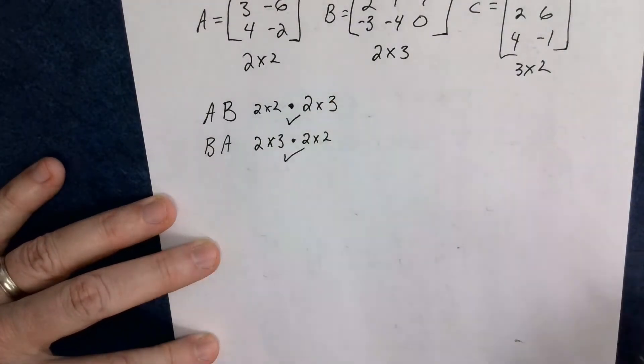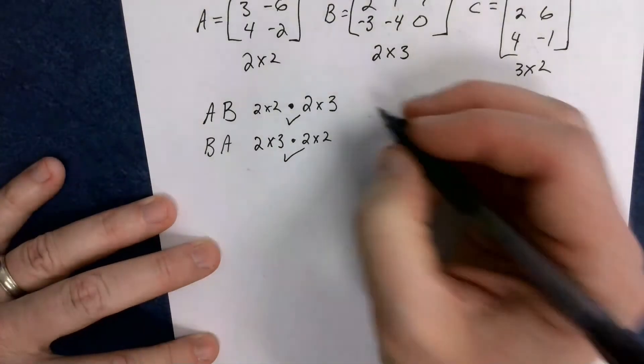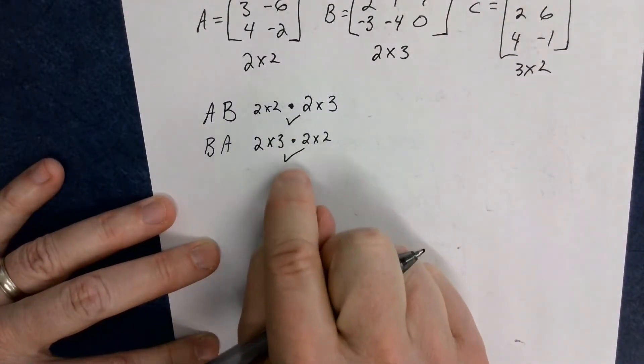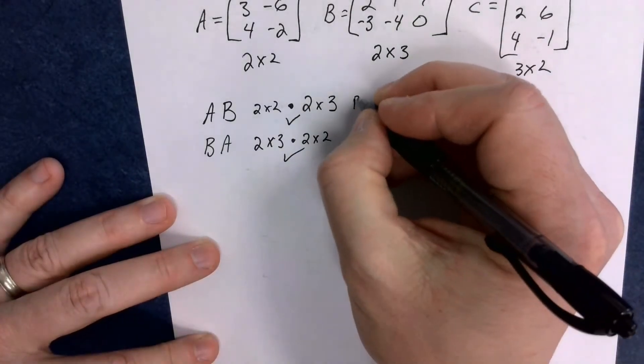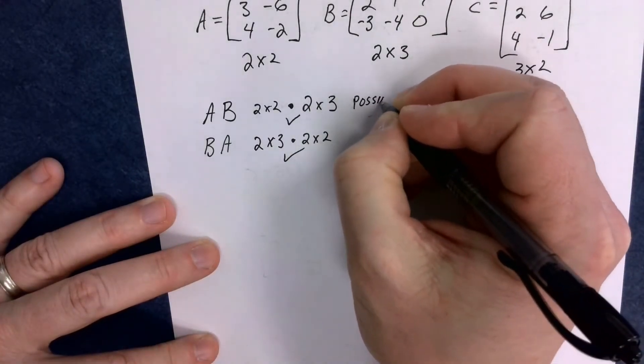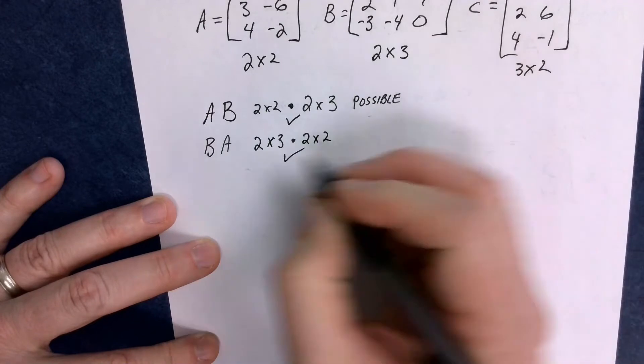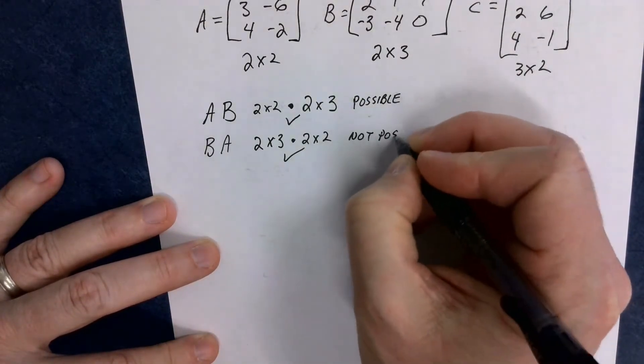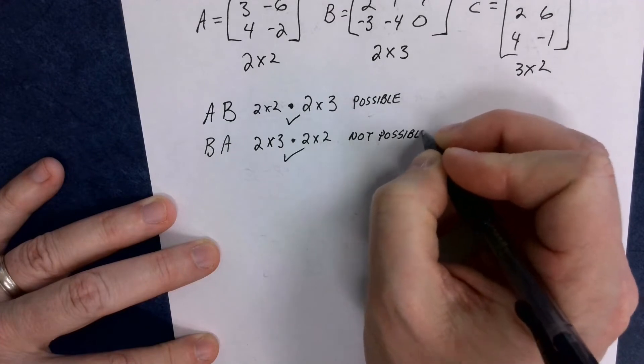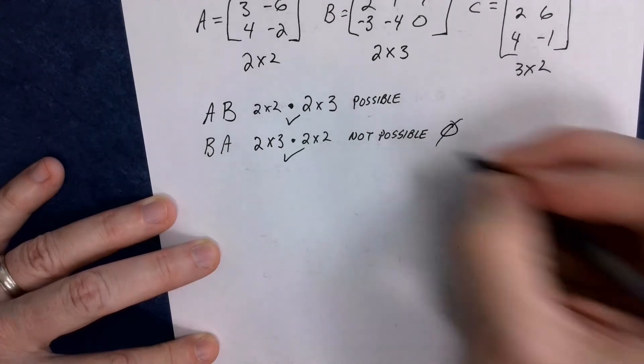The inside numbers. If those numbers are not the same, you can't do it. So two by two, this one is possible. And this one, a three by two, this one's not possible. So I can't even write it down, can't do anything about it, not possible. No solution, and I'm done.